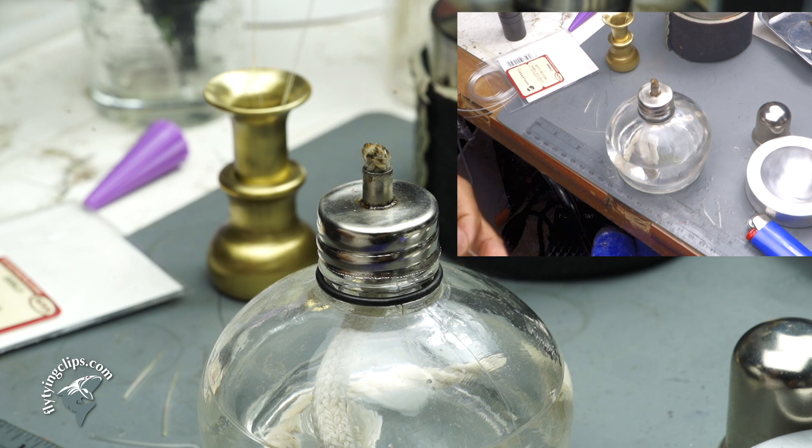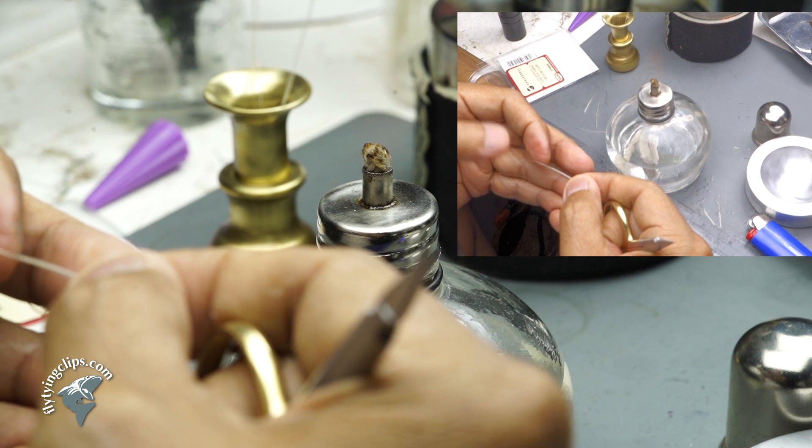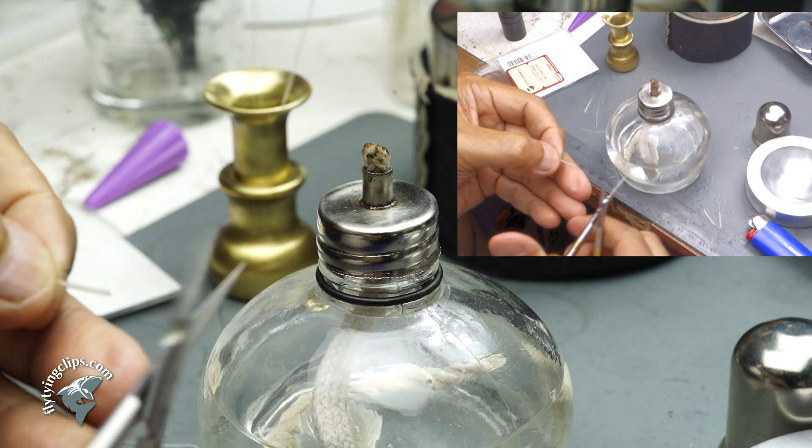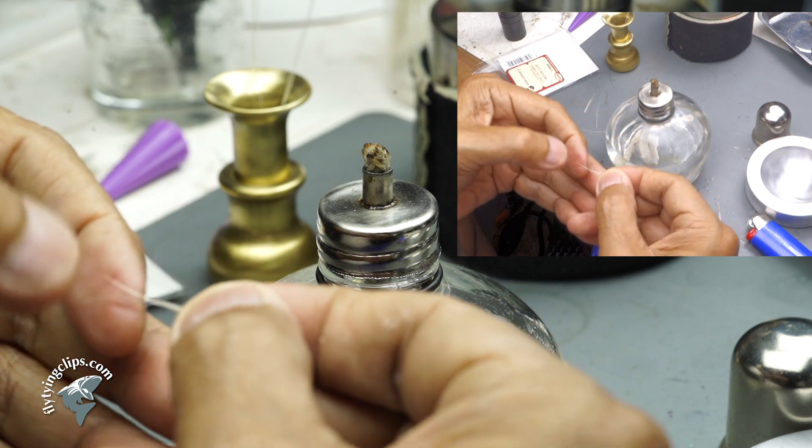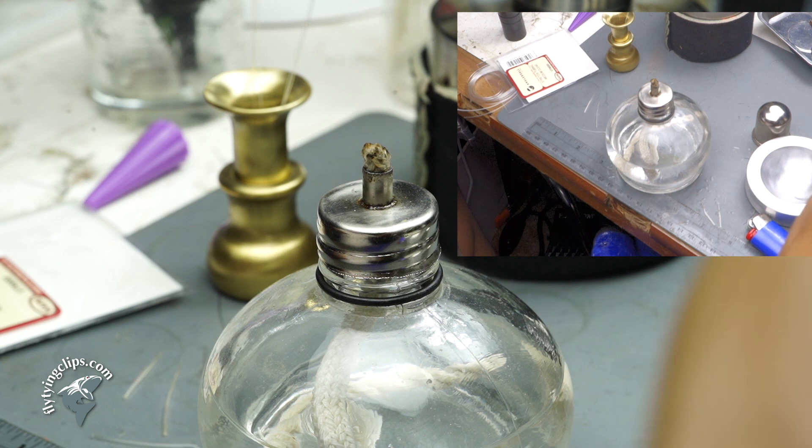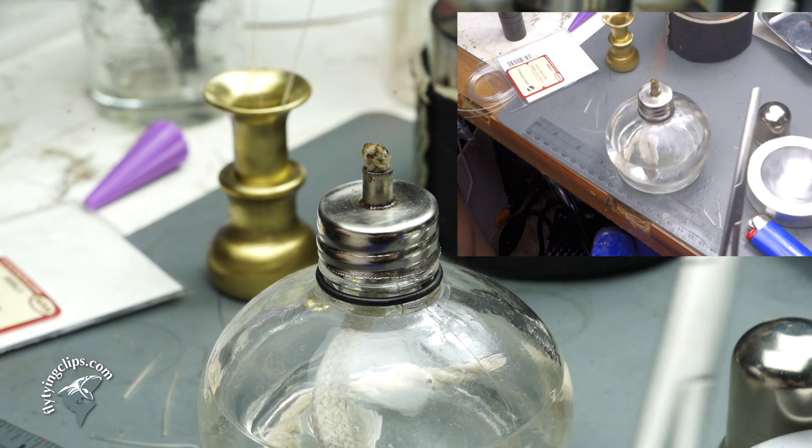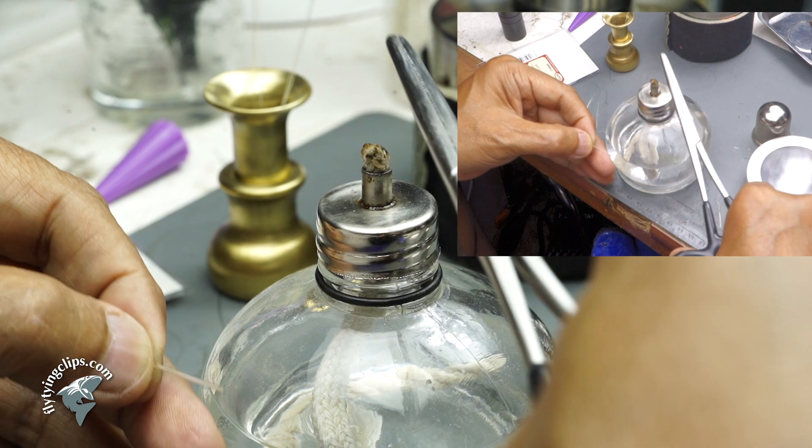Now I'm going to trim off a bit of it to about an inch or so, inch to three quarters. I'm going to take another pair of hemostats, and these still have the teeth on them. I'm going to heat those up and pinch that tubing, and that will give me my segmentation.